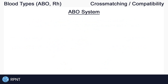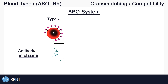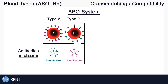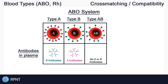Now that we've gone over antigens and antibodies, let's get more specific with each blood type. Starting with the ABO system, we have four blood types: type A, type B, type AB, and type O. Type A blood has A antigens on its surface and B antibodies in its plasma. Type B blood has B antigens on its surface and A antibodies in its plasma. Type AB blood has both A antigens and B antigens on its surface and has neither A nor B antibodies in its plasma.